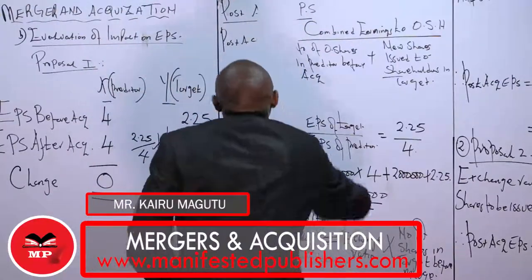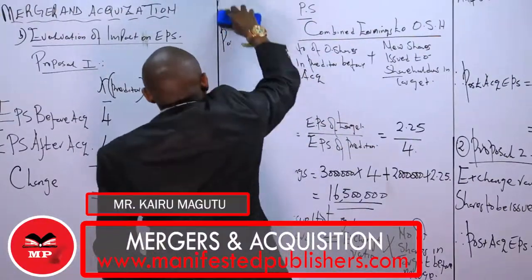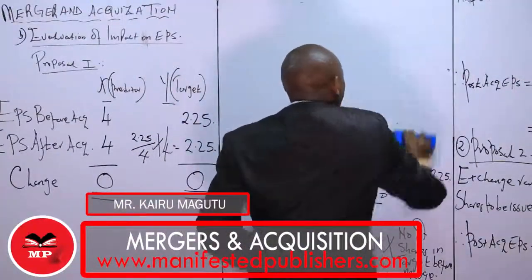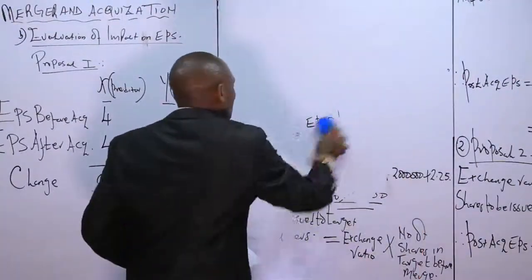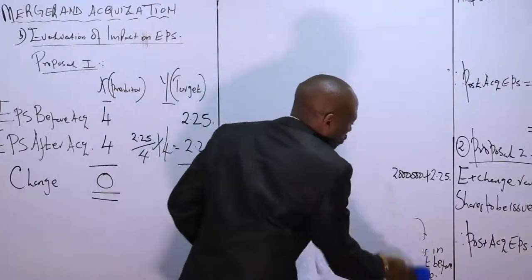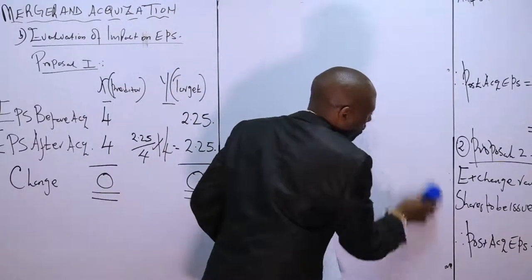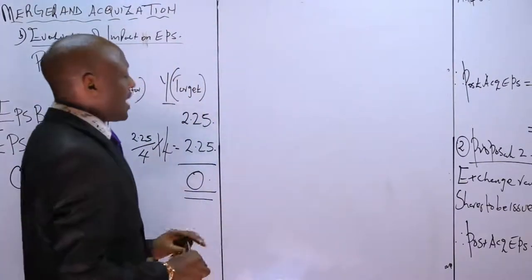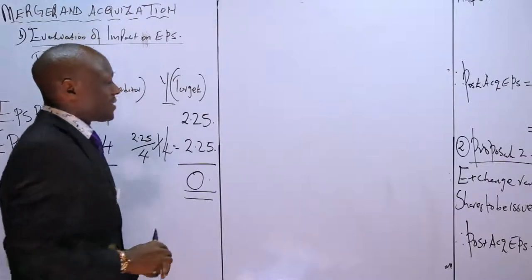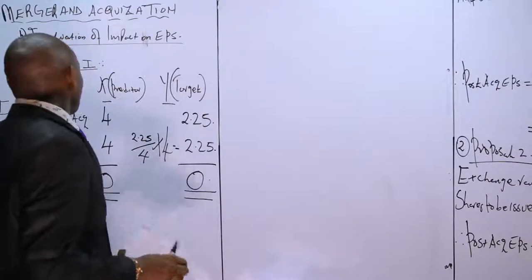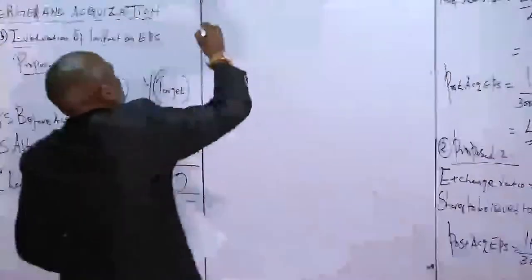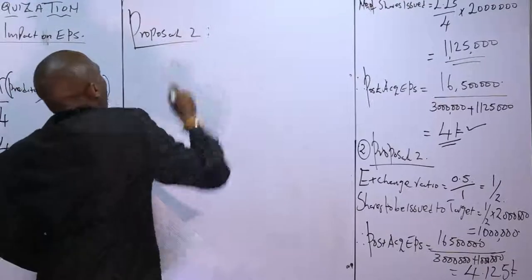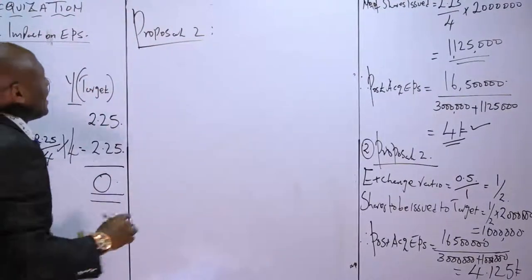Now let us move to Proposal Two. We need to determine the impact on shareholders' EPS both before and after the acquisition. The exchange ratio in Proposal Two is based on zero point five shares from X for every one share in Y.